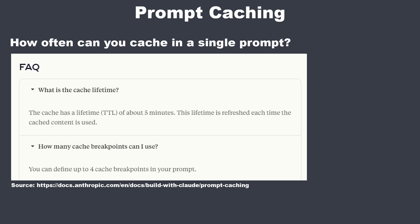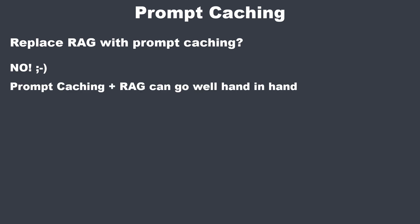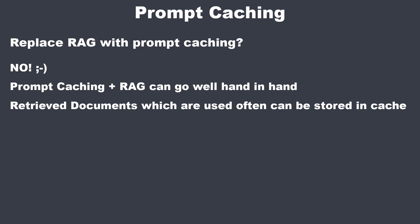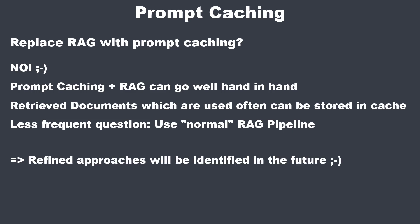Can prompt caching replace RAG? The answer is a clear no — prompt caching and RAG complement each other quite well. In an LLM-based application using RAG, prompt caching is useful when users ask the same or similar questions frequently; retrieved documents can be stored in a cache to significantly improve efficiency. When new or less frequent questions arise, you use the normal RAG system and dynamically retrieve information from the vector store. If a question was asked within the last five minutes, use the cache; otherwise use the vector database.